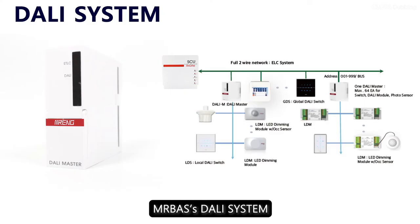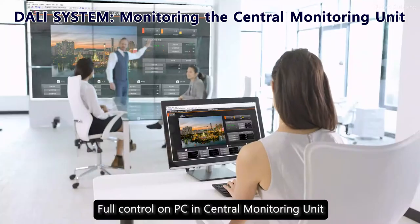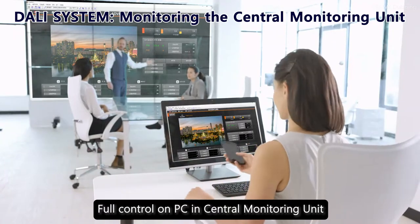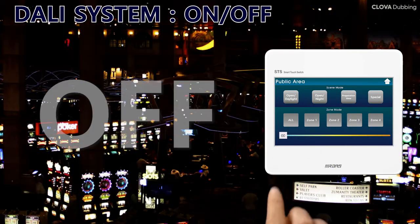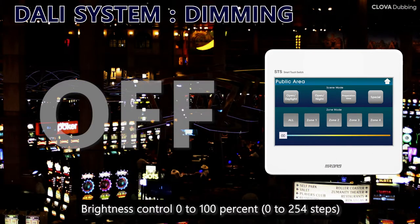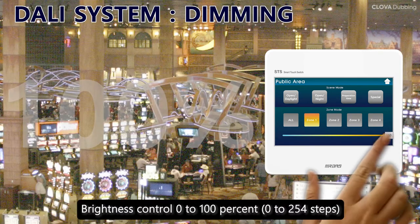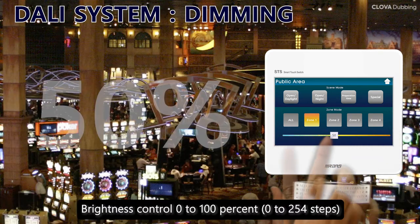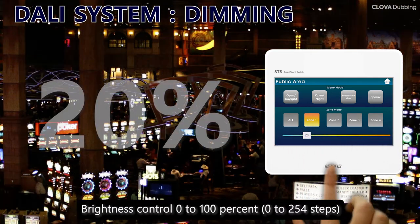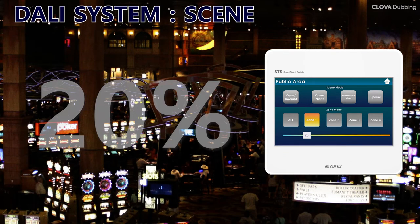The interior is composed of our DALI system and can be monitored and controlled at the PC of the central monitoring board. On and off and dimming controls allow 100%, 50%, and 20% settings for users to control the illumination they want using the on-site switch, to create a variety of illuminations in the casino area.